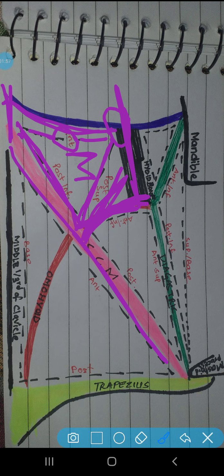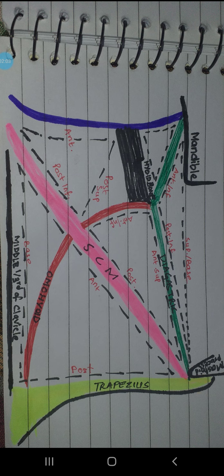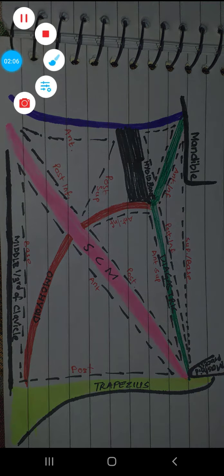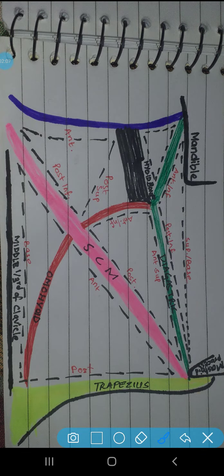The posterior inferior boundary of the muscular triangle is formed by the sternocleidomastoid - its anterior border forms the posterior inferior boundary. Now let's look at the contents of this muscular triangle.